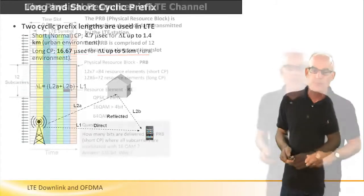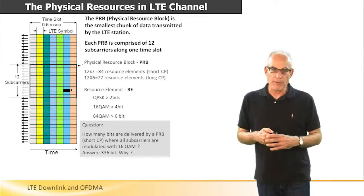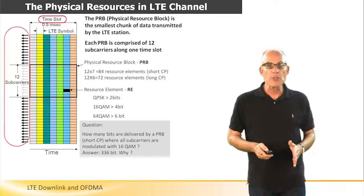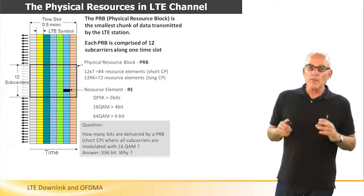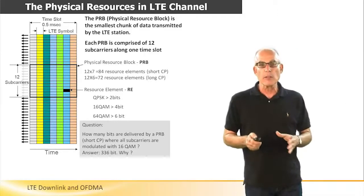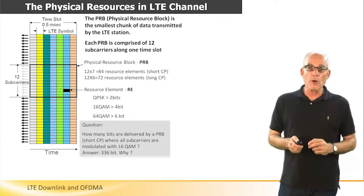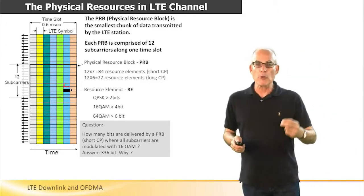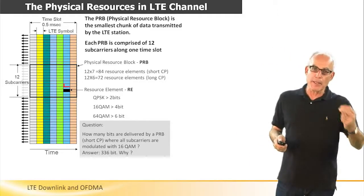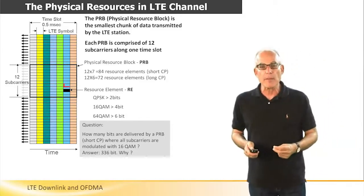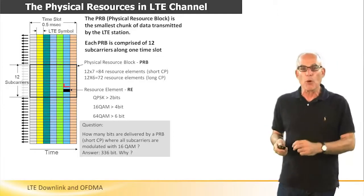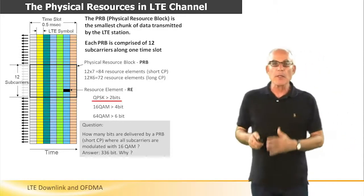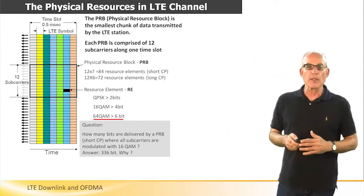Let's now look at the structure of the radio frame in two dimensions — the time dimension with time slots and LTE symbols, and the frequency dimension with subcarriers. The smallest unit of data is called a resource element (RE), made out of one LTE symbol and one subcarrier modulated by some number of bits. The number of bits that can be incorporated into a single resource element depends on the modulation scheme and channel quality. In the case of QPSK modulation, a resource element will contain 2 bits; in the case of 64 QAM, the resource element will contain 6 bits.